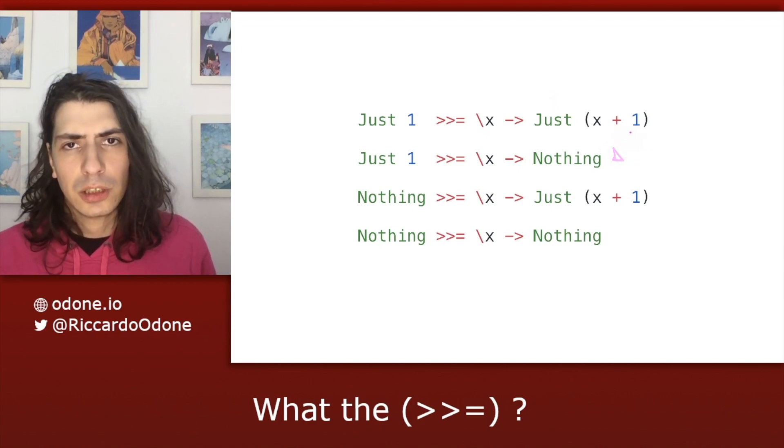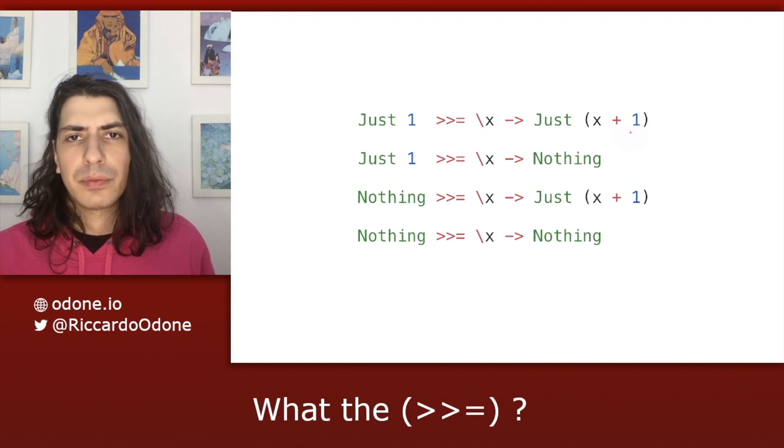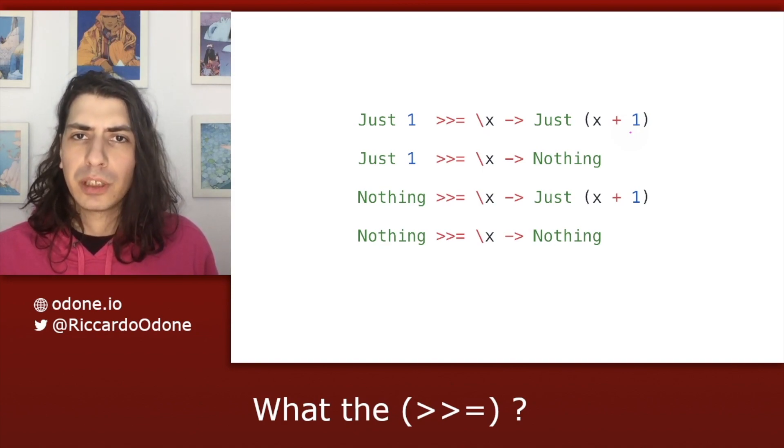In case of functor and applicative functor, we didn't have this power. The step function could only make a transformation on the value, but not on the context.